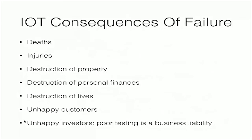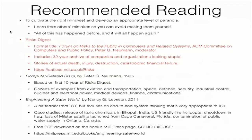Here I have some recommended reading intended to cultivate the right mindset and develop an appropriate level of paranoia. We want to learn from others' mistakes so you can avoid making them yourself. All of this has happened before and it will all happen again. If you take nothing else from this presentation, at least look at Risks Digest — become a Risks Reader. The formal title is 'The Forum on Risks to the Public and Computer-Related Systems.' It's a news service that collects stories of actual death, injury, destruction, and catastrophic financial failure of real systems in the real world. There are 32 years worth of archives of companies and organizations looking stupid.